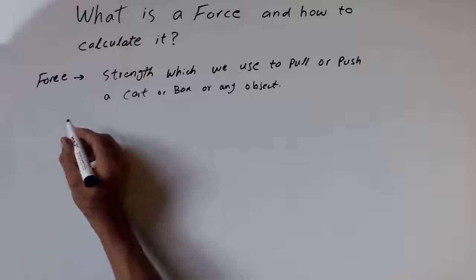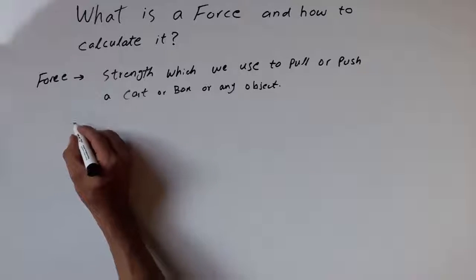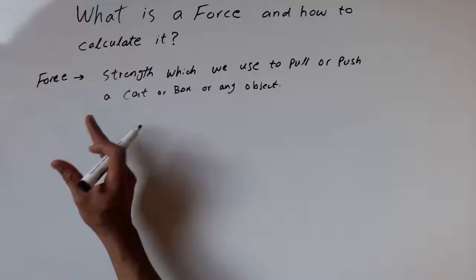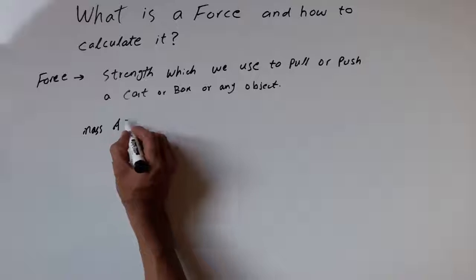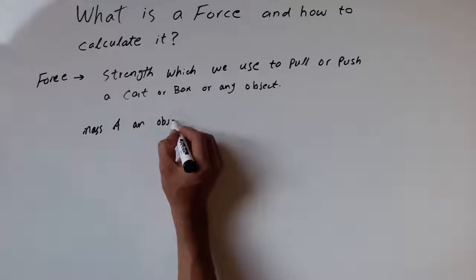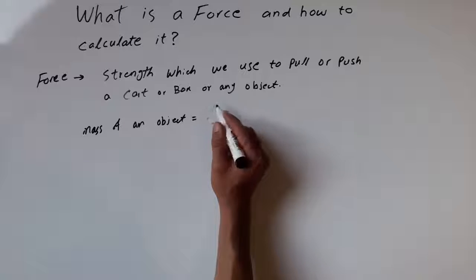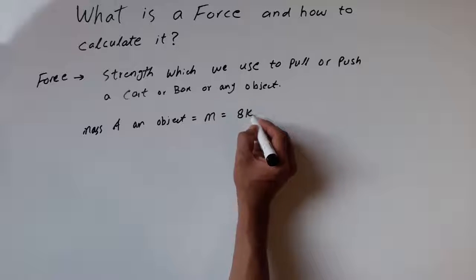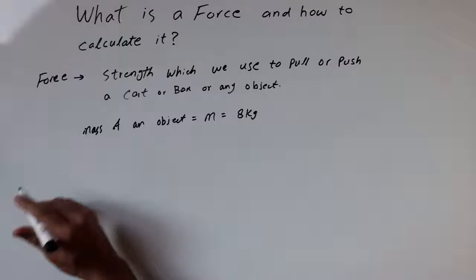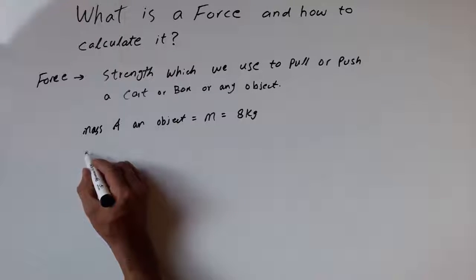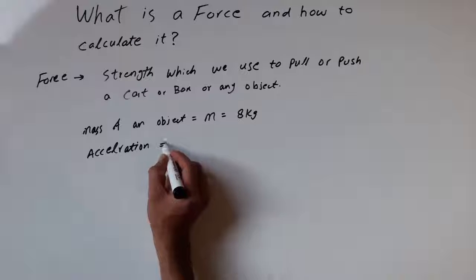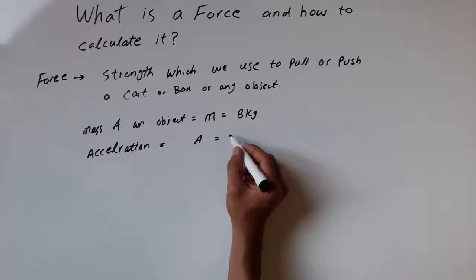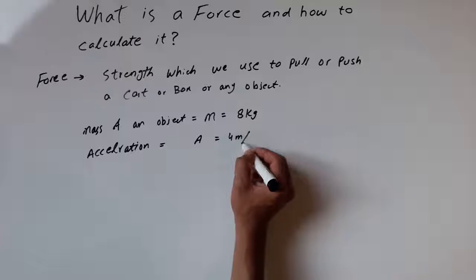I'm going to describe an example of how to calculate a force. Let's say we have an object having mass 8 kg. The mass of the object m is equal to 8 kg. It accelerates — it moves from point A to point B. Acceleration a is equal to 4 meters per second squared.